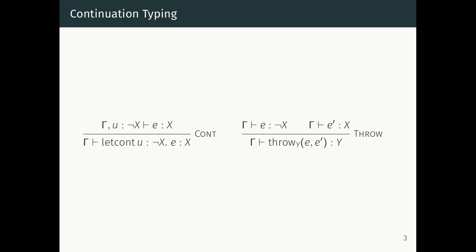We saw in the last lecture that we can similarly give two constructs to program with continuations by introducing a throw and a let/cc operator. Let/cc binds the current continuation to a variable and then evaluates the body, and throw takes a continuation of type not-X and an X and sends that X to the continuation. So let/cc u.e has type X when e is an expression of type X, assuming u is a variable of type not-X. This is like proof by contradiction: to prove X, we assume not-X, and if that ever leads to a contradiction, by ex falso we get our answer.